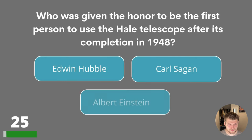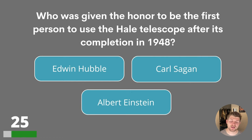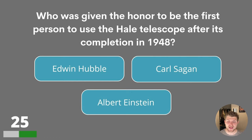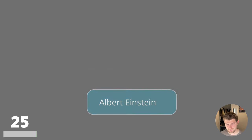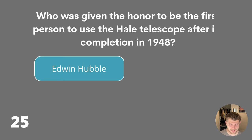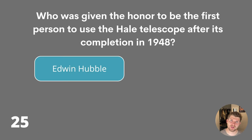Question twenty-five. Who was given the honour to be the first person to use the Hale telescope after its completion in 1948? Edwin Hubble, Carl Sagan or Albert Einstein? The answer is Edwin Hubble.